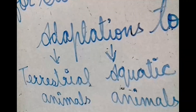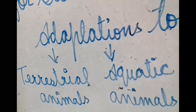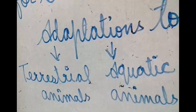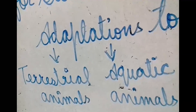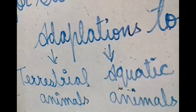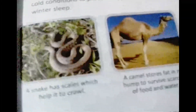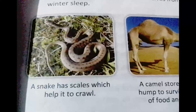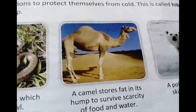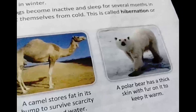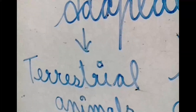Some animals like penguin and seal have a thick layer of fat under the skin called blubber that helps keep their body warm. Animals like bear and frog become inactive and sleep for several months in cold conditions to protect themselves from cold — this is called hibernation or winter sleep. Examples of terrestrial animals include snake, camel, and polar bear.